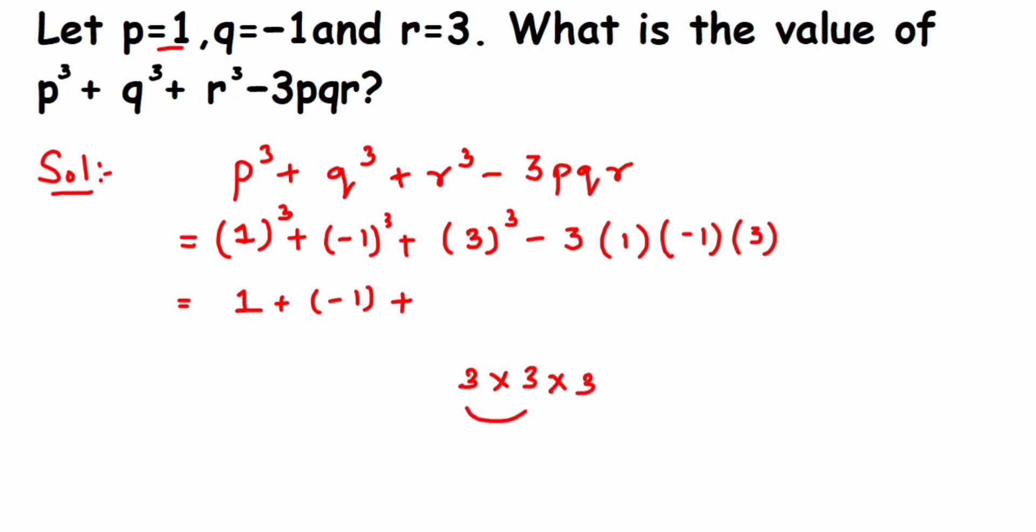Then minus: multiply 3 × 1 is 3, then 3 × minus 1 is minus 3, minus 3 × 3 is minus 9. So we'll get minus 9. Now I can cancel 1 and minus 1; you can cancel them or just add them. 1 minus 1 will be 0, so I'll just cancel these two values.